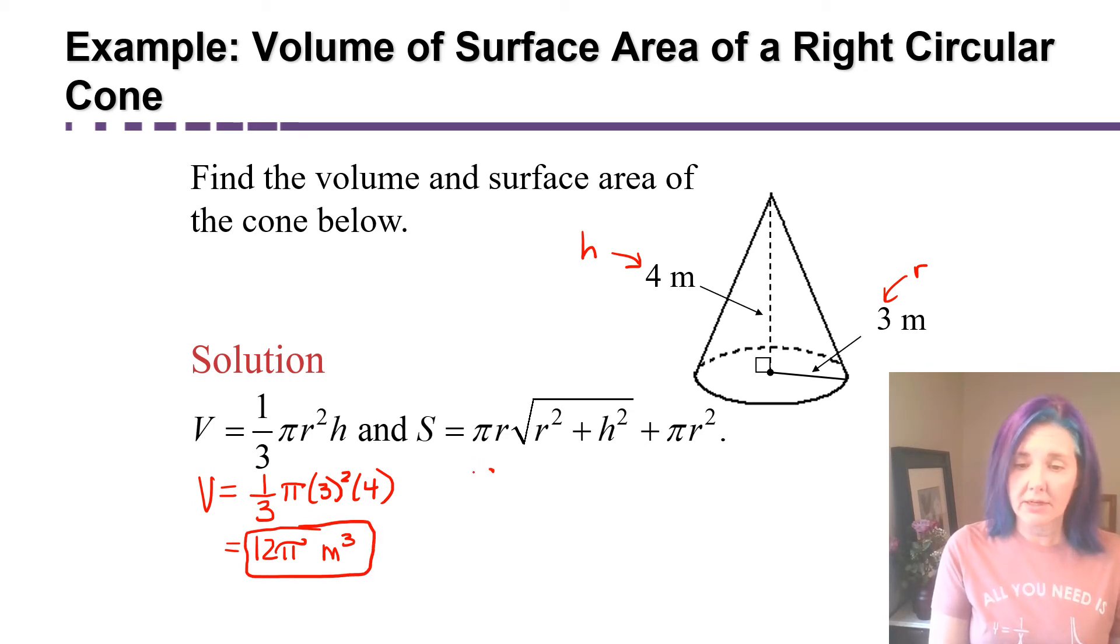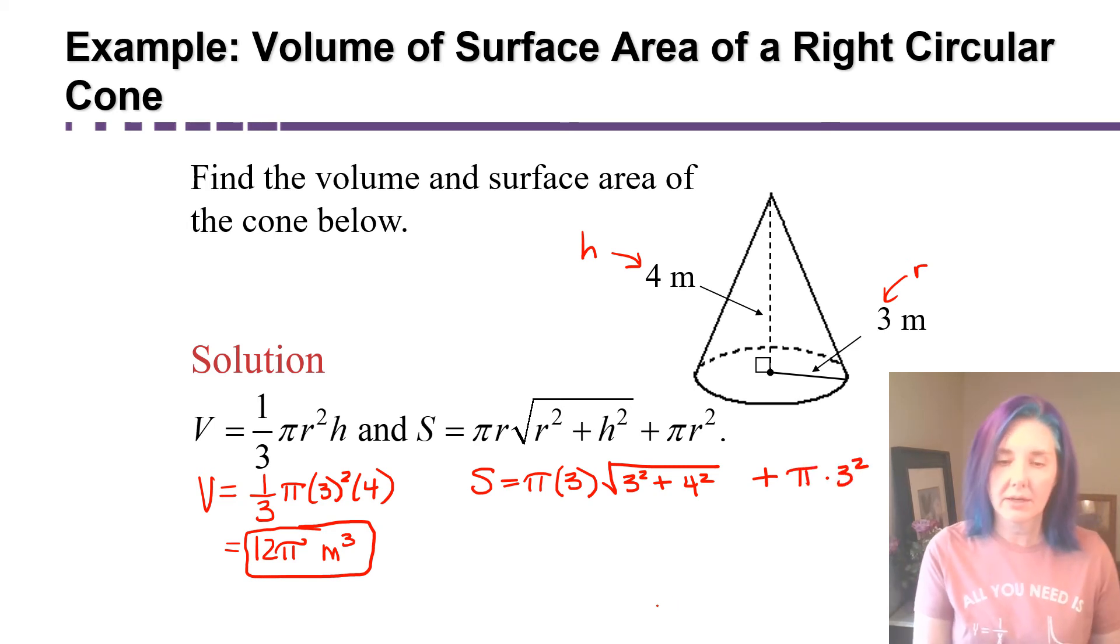And then for the surface area, we're going to have pi times three times the square root of three squared plus the height squared, so four squared. All of that is separate. Then we have a plus, and then we have pi times three squared out here.